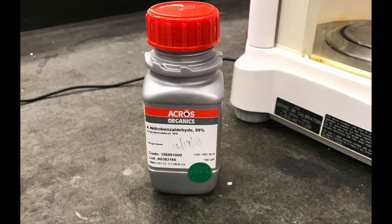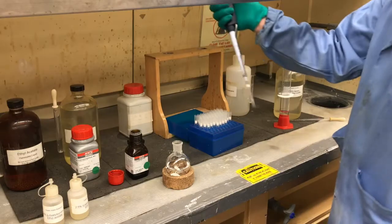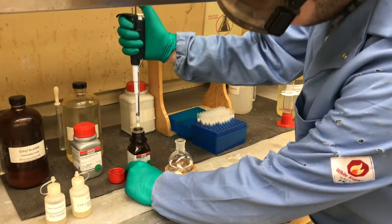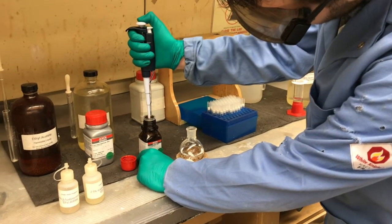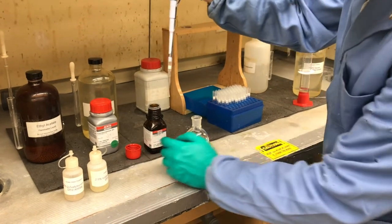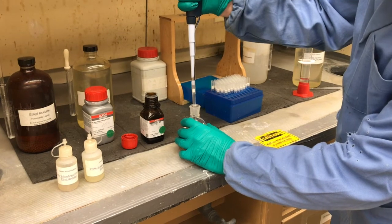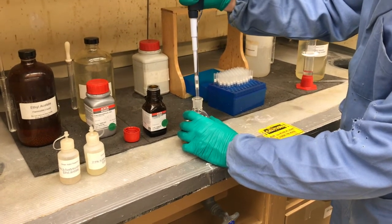Once again, for the room temperature reaction, we started out by weighing out p-nitrobenzaldehyde. Here's how much we weighed out. Then we added the 2-acetylpyridine to a round bottom flask that already had the deionized water. We added 0.448 milliliters once again, just like the elevated temperature reaction.